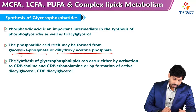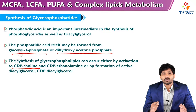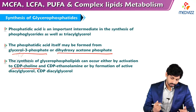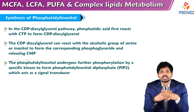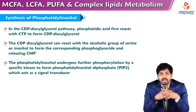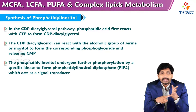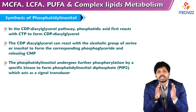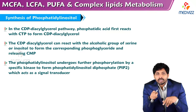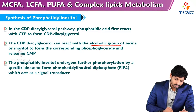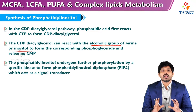The synthesis of glycerophospholipids can occur either by activation of CDP-choline or CDP-ethanolamine, or by formation of active diacylglycerol or CDP-diacylglycerol. In the CDP-diacylglycerol pathway, phosphatidic acid first reacts with CTP to form CDP-diacylglycerol. Here, instead of ATP we are talking about CTP — cytidine triphosphate. CTP accepts the diacylglycerol and forms CDP-diacylglycerol, which can then react with the alcoholic group of serine or inositol to form the corresponding phosphoglyceride, releasing CMP.